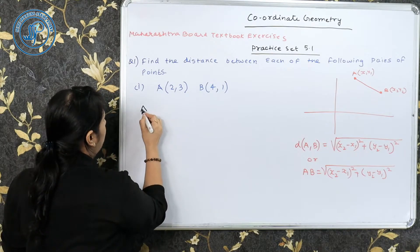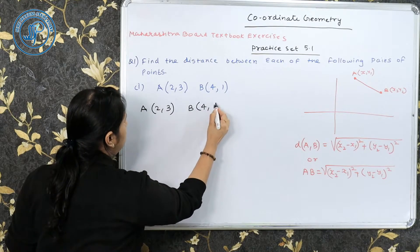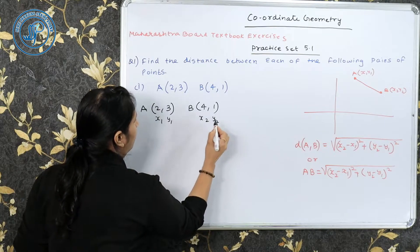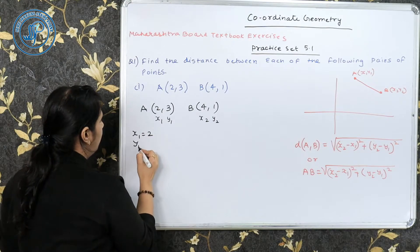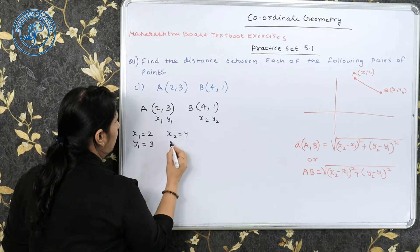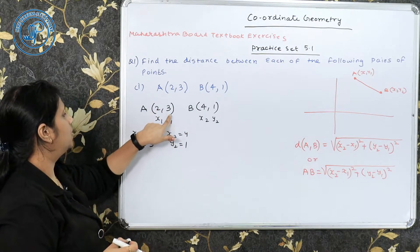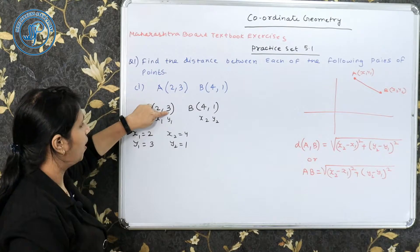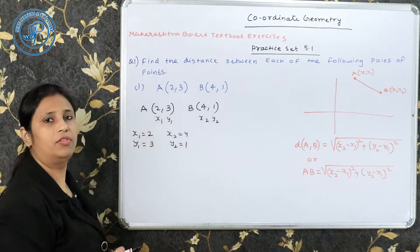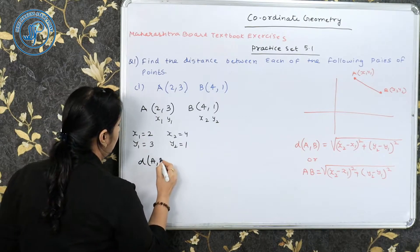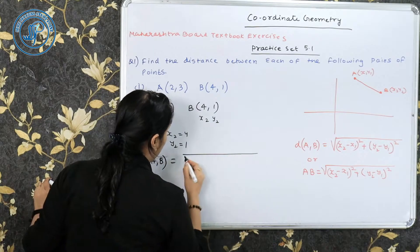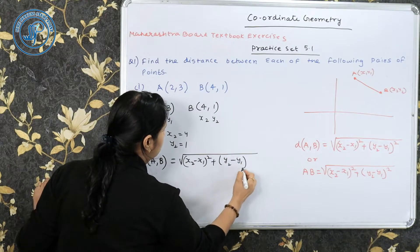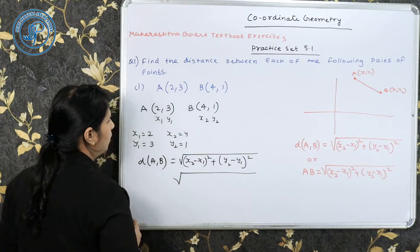हमारे पास point A और B दिया है। A का coordinate है और B का coordinate दिया है। This is our (x1, y1) and this is (x2, y2). आप चाहें तो लिख सकते हैं: x1 = 2, y1 = 3, x2 = 4, y2 = 1। मुझे distance निकालनी है AB के बीच में, तो मैं distance formula apply करूँगी: √[(x2 − x1)² + (y2 − y1)²]।